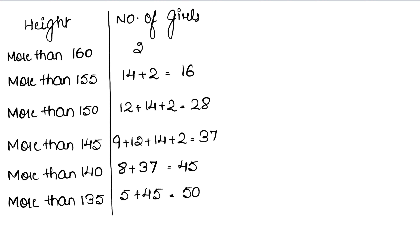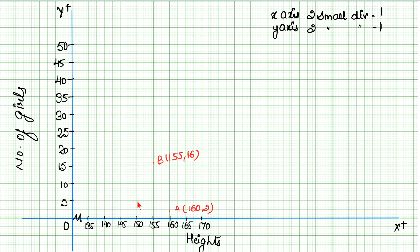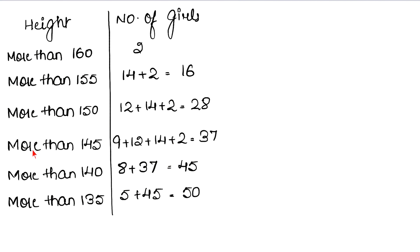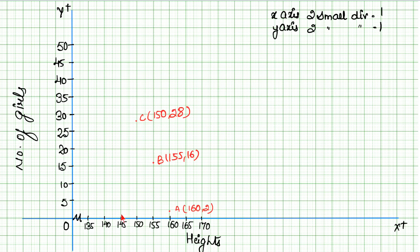Next we have more than 150 corresponding to 28, which gives us point C at (150, 28). Then more than 145 corresponds to 37, and that's 74 boxes up, giving us point D at (145, 37).